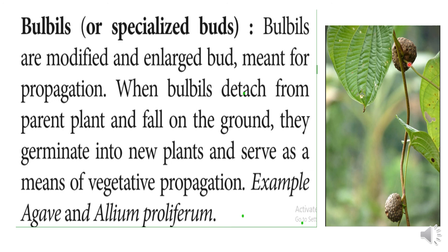The bulbils, once mature on the parent plant, get separated and land on the ground, producing a new plant — that is vegetative propagation. Vegetative propagation produces new plants from root, stem, or leaves. Example: Allium proliferum, the tree onion, propagates through bulbils.